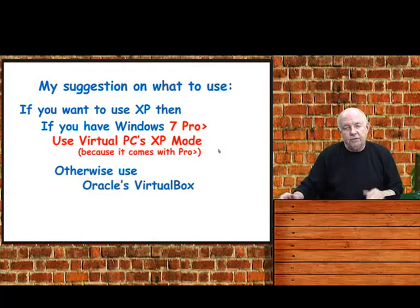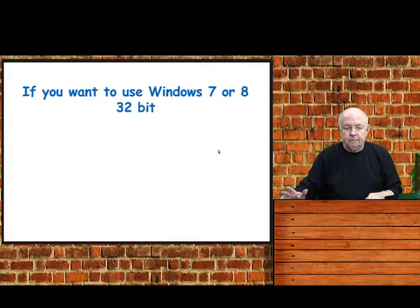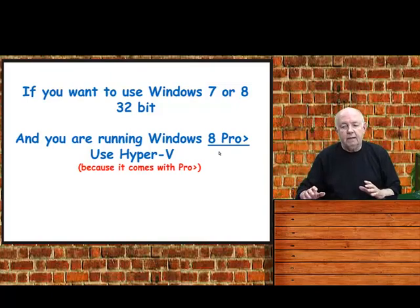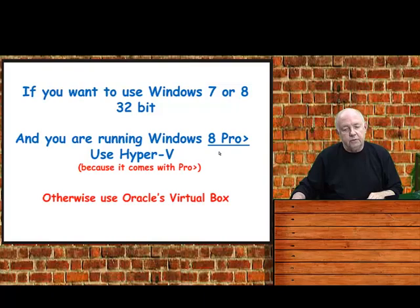Otherwise, use Oracle's VirtualBox. If you want to run Windows 7 or 8 32-bit, and if you're running Windows 8 Pro or greater — the Ultimate Edition — you can use Hyper-V because it comes with the Pro. Otherwise, use Oracle's VirtualBox.